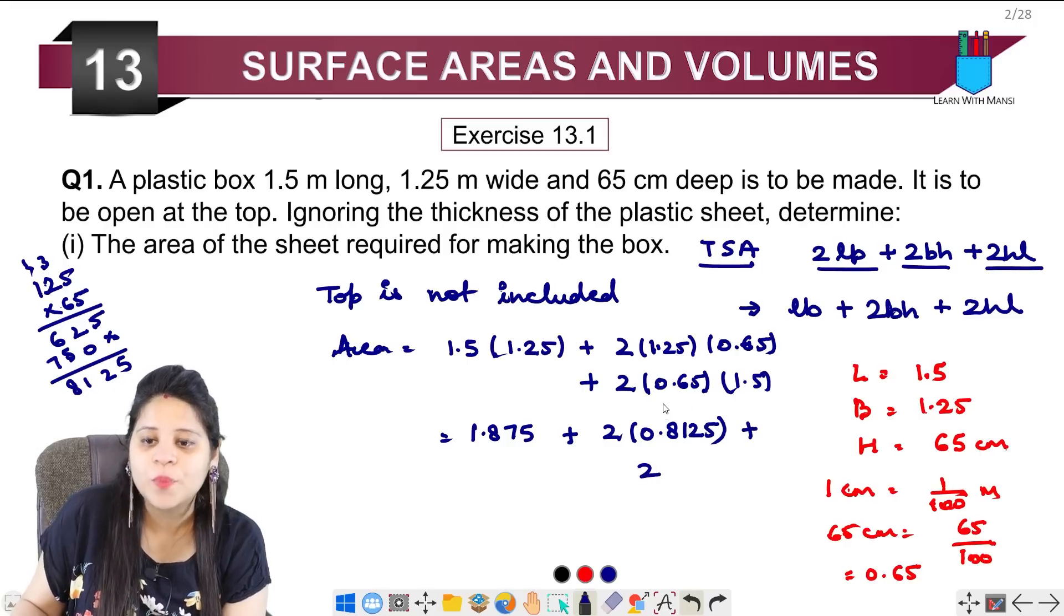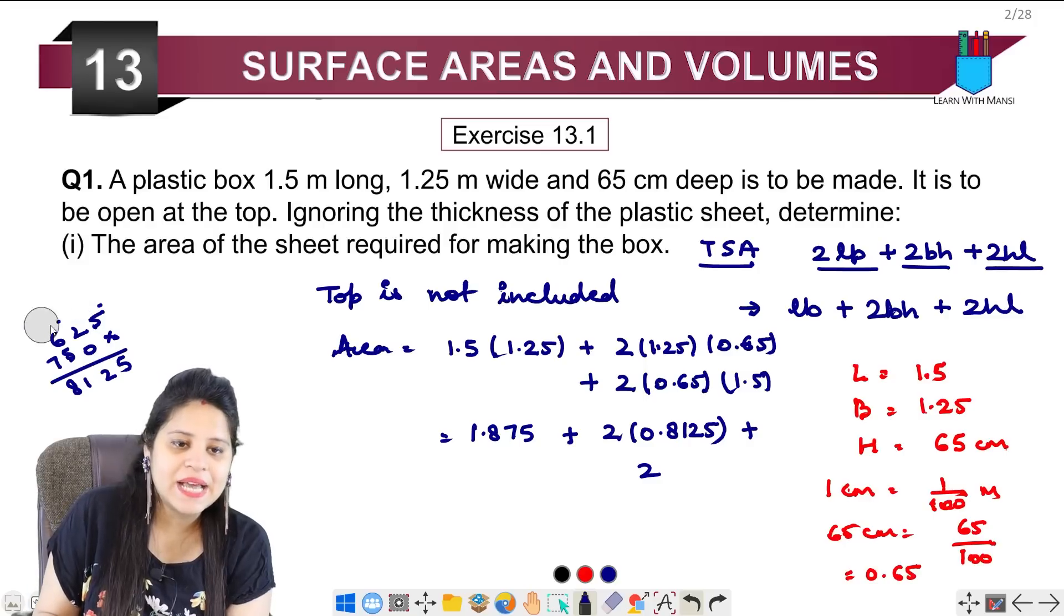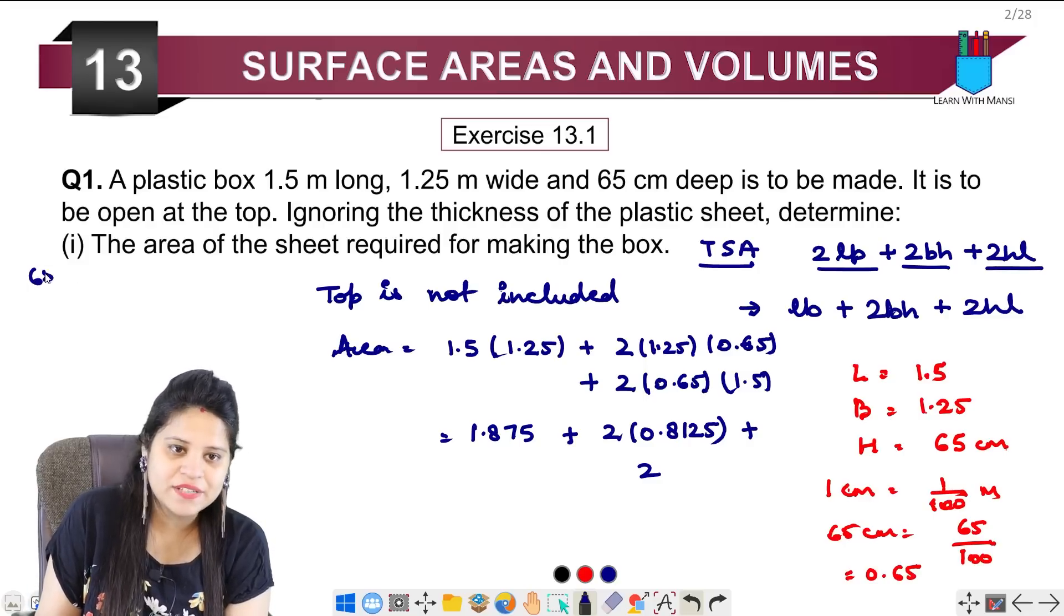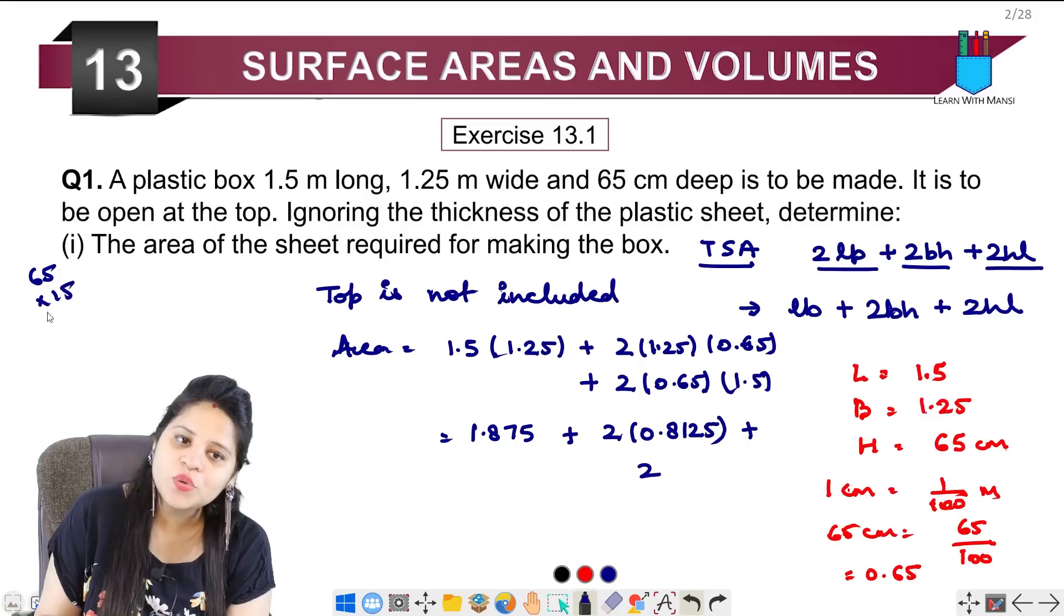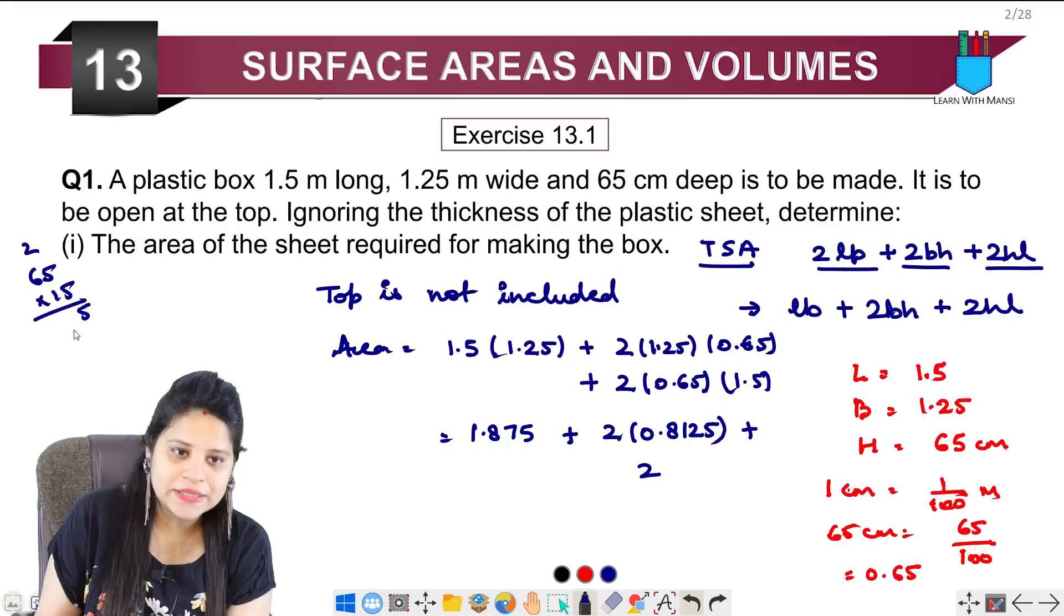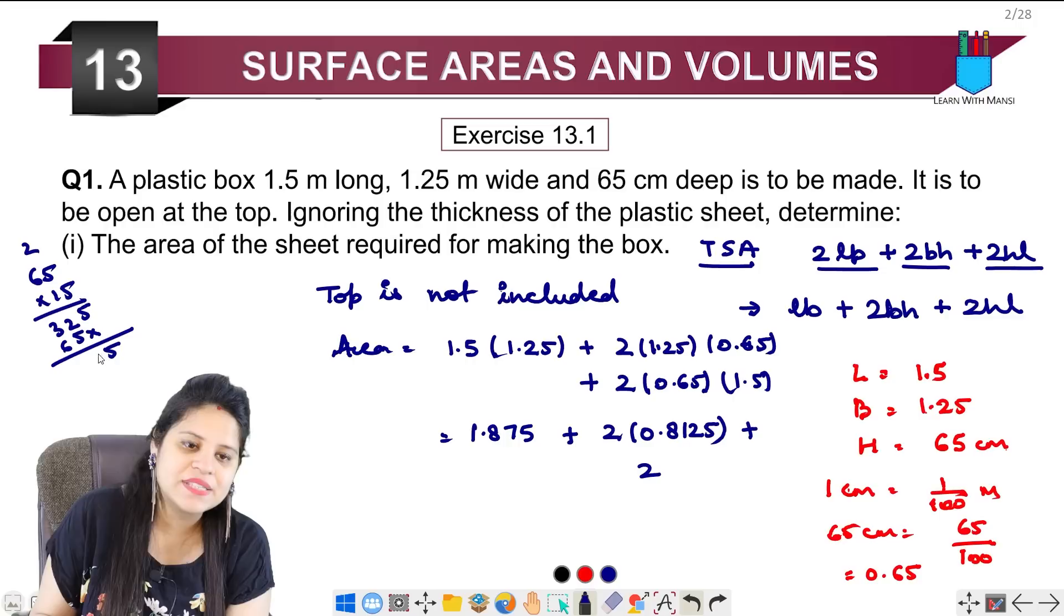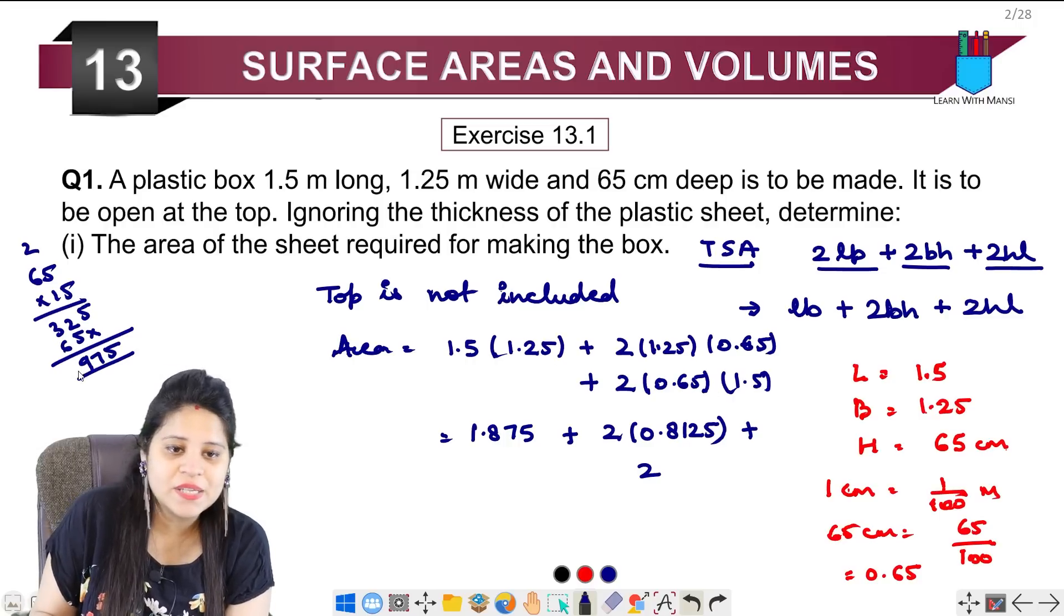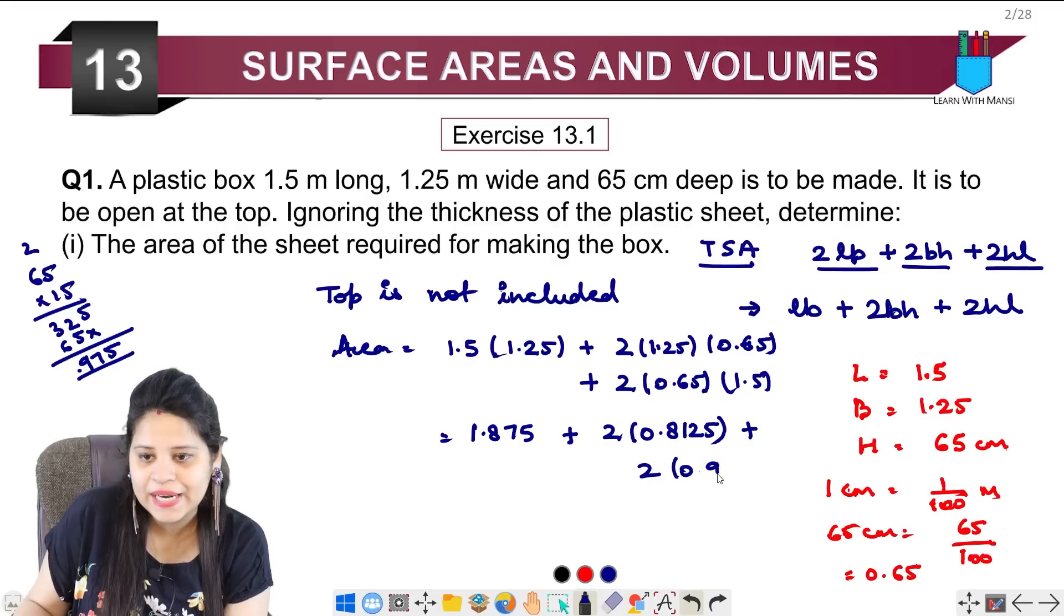Plus, 2. Now, we have to multiply again. 65 into 15. We will do 65 into 15. 5, 5 is 25. Then, 6, 5 is 30. Plus, 2 is 32. We will do 5, 6. 5, 6, 7. Then, 6, 7, 8, 9. 9, 7, 5. For decimal. 1, 2, 3. 3 digits will be before the decimal. This will also be 0.975.